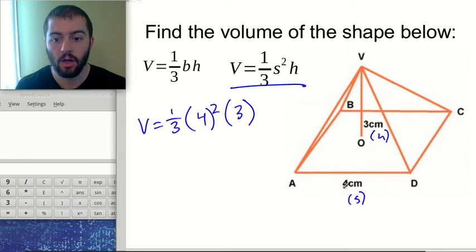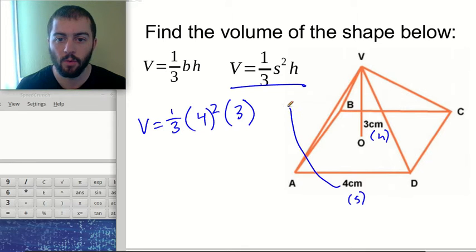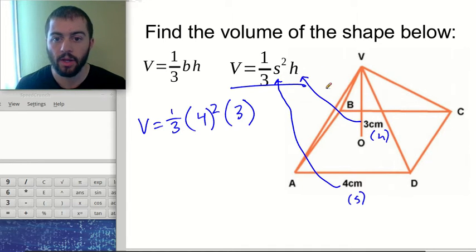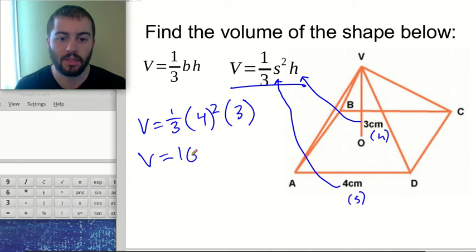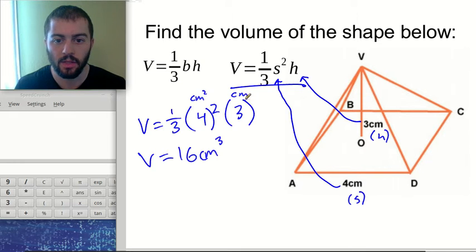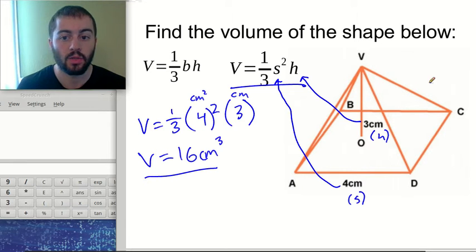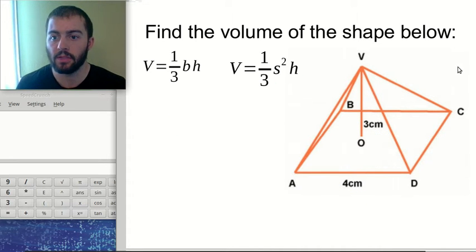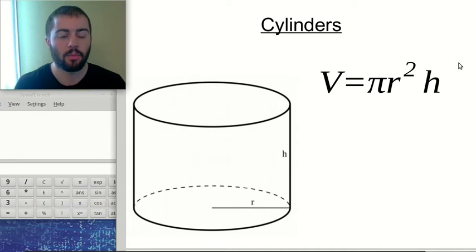We plug in all our numbers into the appropriate spots in this formula. Four centimeters went in for the side length and three centimeters for the height. We multiply out and end up with 16. Our units are centimeters cubed, because we had centimeters squared times centimeters for the height, giving us centimeters cubed. So 16 centimeters cubed is our final answer.